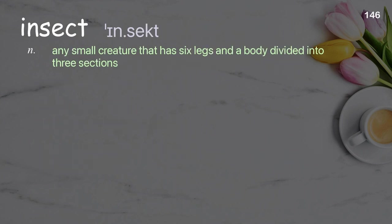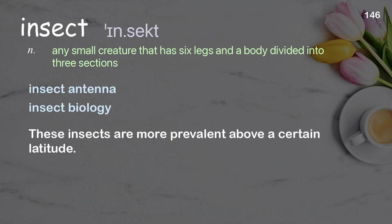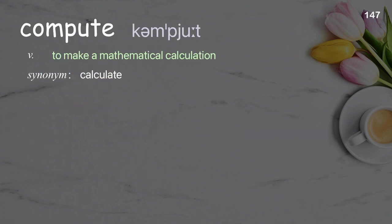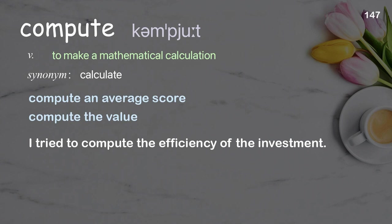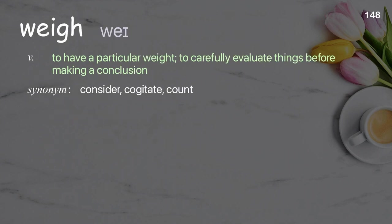Insect: any small creature that has six legs and a body divided into three sections. Examples: insect antenna, insect biology. These insects are more prevalent above a certain latitude. Compute: to make a mathematical calculation. Examples: compute an average score, compute the value. I tried to compute the efficiency of the investment.